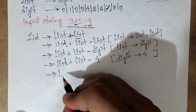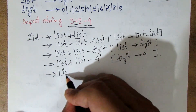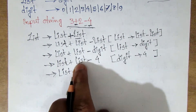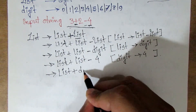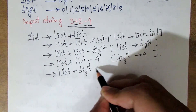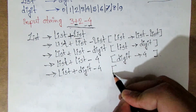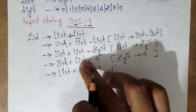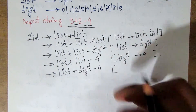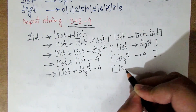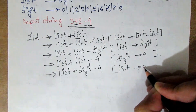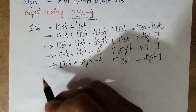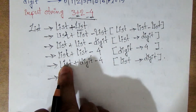So a list is list plus. I am going to add list plus. Now I will change this list. So this list I am going to make digit — digit minus 4. List implies digit. So this list implies digit.